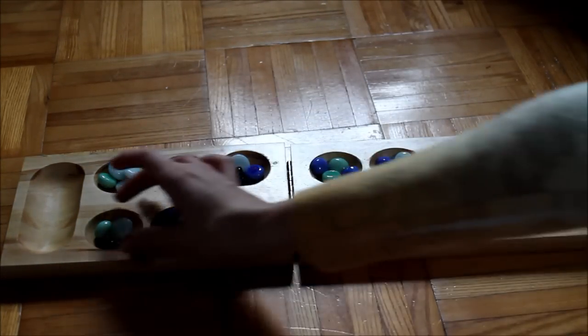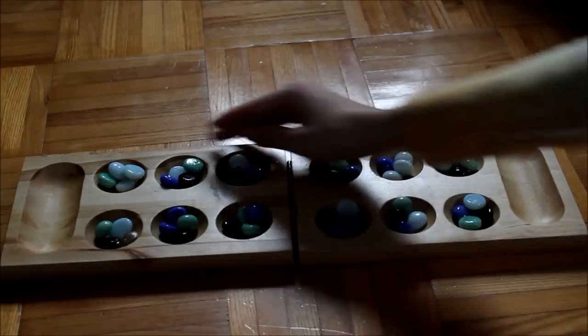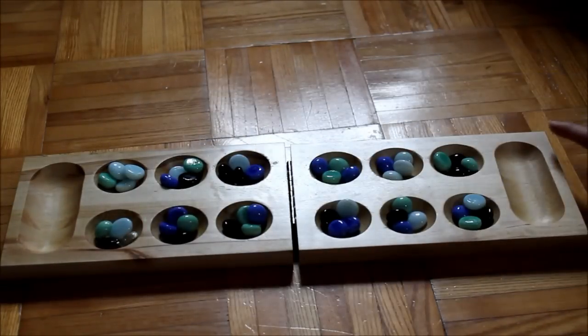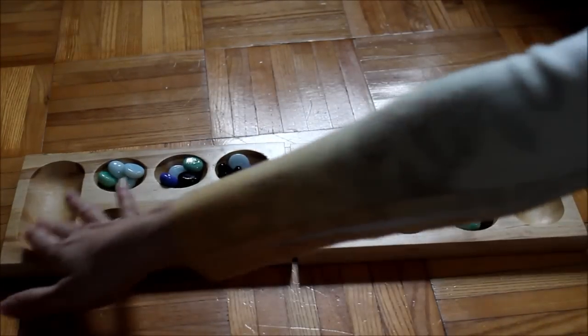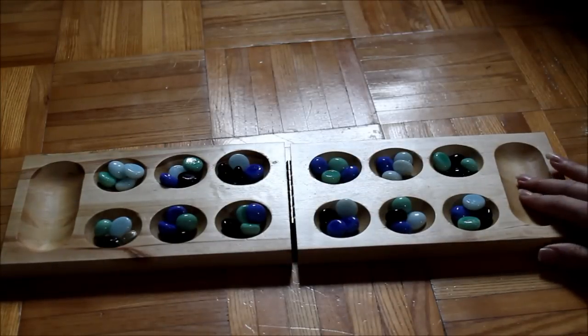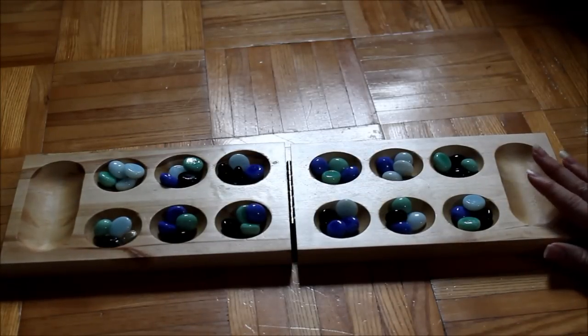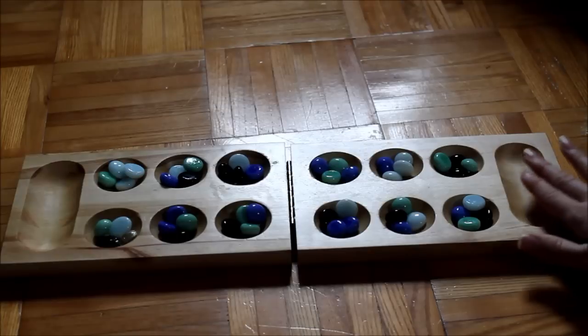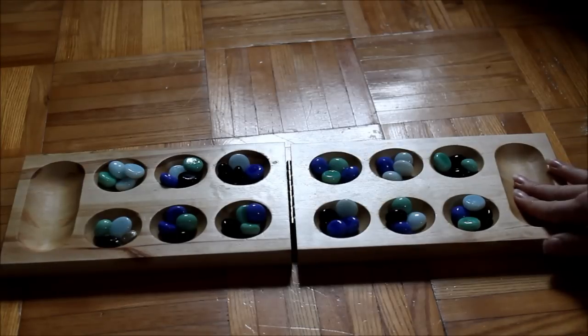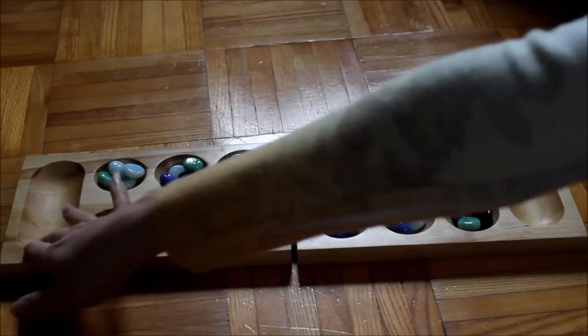This is my side of the board, and this is my opponent's side of the board. These spaces here are called stores. This is where you're going to store your seeds. The store directly to my right, that's my store. This is my opponent's store.